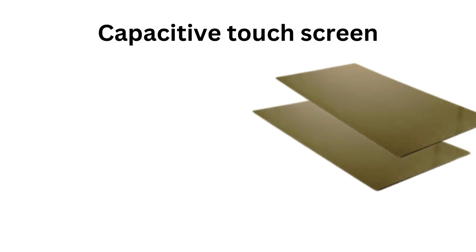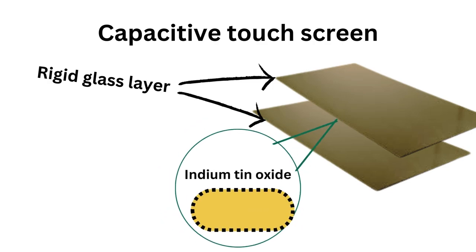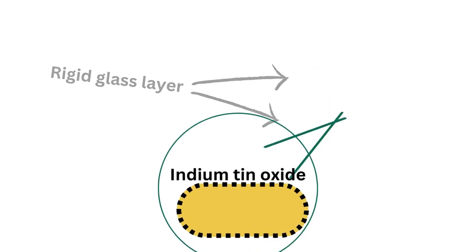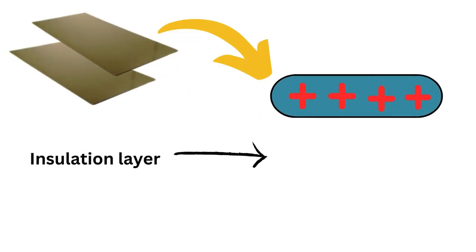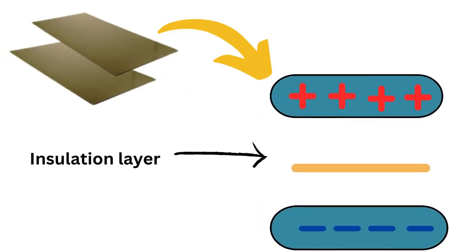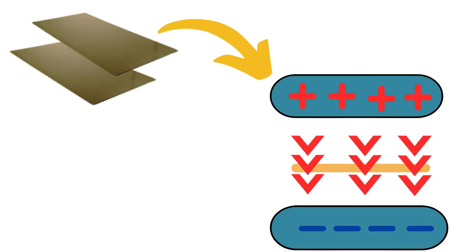Next, the capacitive touchscreen. Unlike resistive touchscreen which has flexible layers, these two are rigid glass layers. They are coated with a highly conductive, transparent material. There are two layers in capacitive screens. One layer has a positive charge and the other layer has a negative charge. Therefore, this creates an electric field.